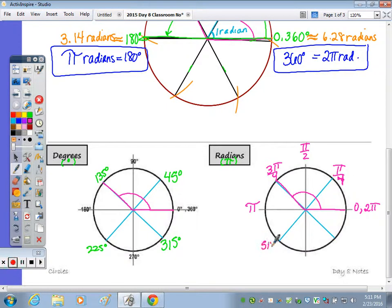6 fourths, which reduces to 3 pi over 2. And then 7 pi over 4. And then, of course, 8 fourths, which would reduce to just 2 pi.